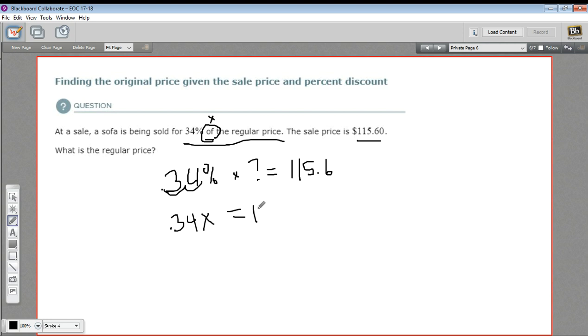X equals 115.6. Now to solve for x to find the original price, we just divide by 0.34. So this is 115.6 divided by 0.34. I think you'll need to do this on your calculator and it should be 340 dollars.